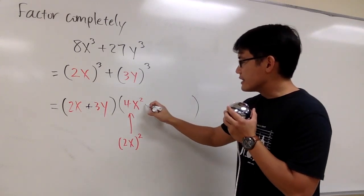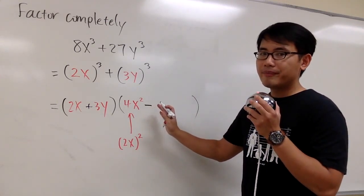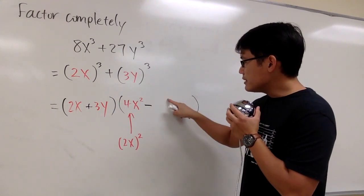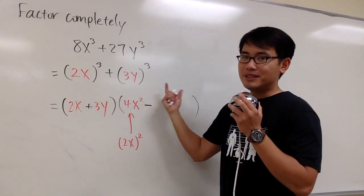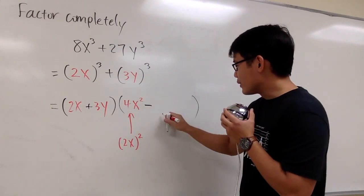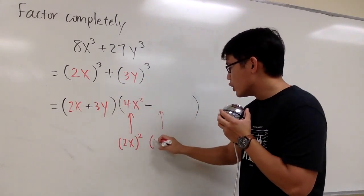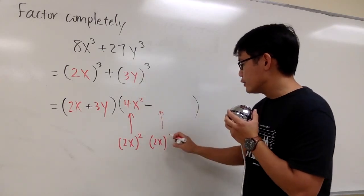And then next, the sign is going to be minus, so we have to remember that carefully. To get this term, we do this times that, the a times b situation in the formula. I'll write this down. We have to work out 2x times 3y.